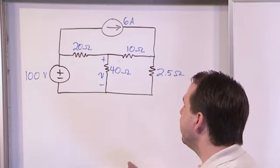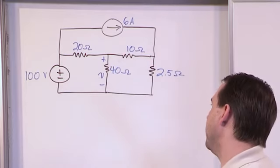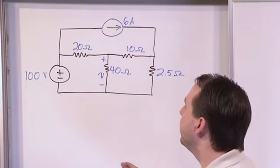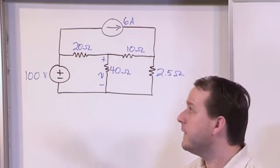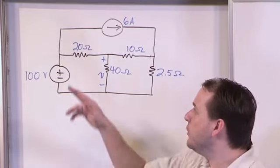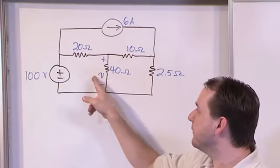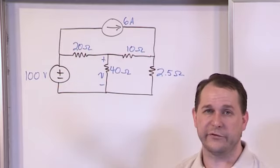Superposition basically says that, for instance, in this circuit we're trying to calculate the voltage V across this 40 ohm resistor. We know that this 100 volt source is going to generate some current. It's going to go into the circuit. We know the 6 amp source is going to push some current into the circuit. We know that they're all going to make their way around and then the end result of the voltage here is going to be related to what both of these sources are doing.